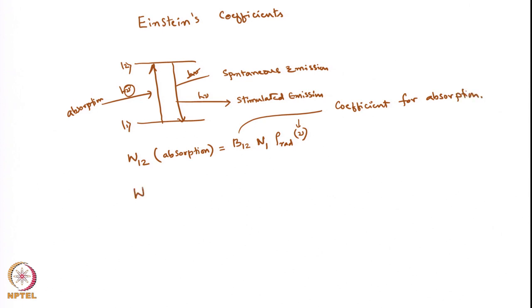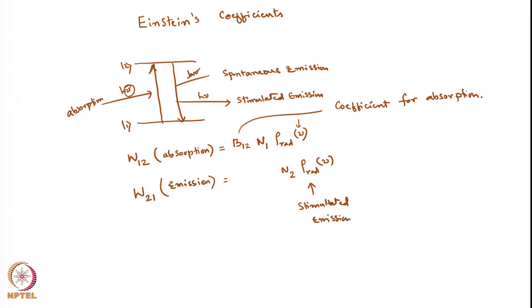Similarly, W21 corresponds to emission. Emission will consist of both spontaneous emission and stimulated emission. This will be equal to the population N2 times radiation density rho(nu) for stimulated emission, plus N2 for spontaneous emission. Spontaneous emission does not need the radiation — it happens in the absence of h-nu and therefore does not need rho(nu).